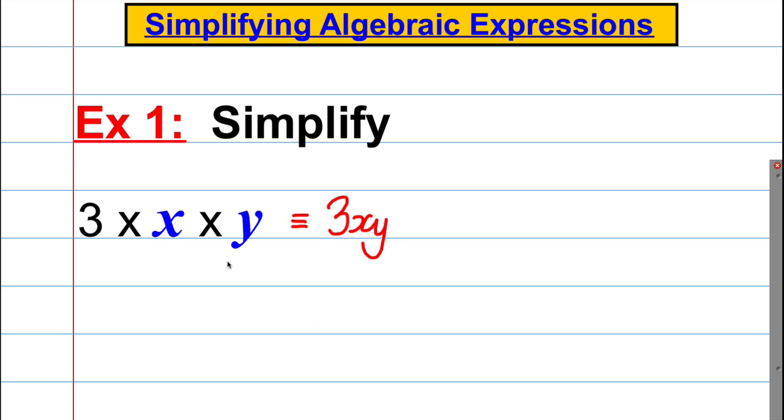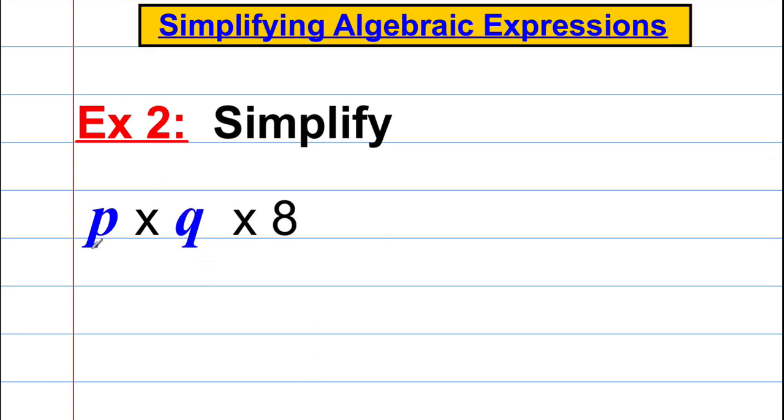Let's look at another one, example 2. P multiplied by q multiplied by 8. Now we know multiplication can happen in any order. Multiplication is what's called commutative.